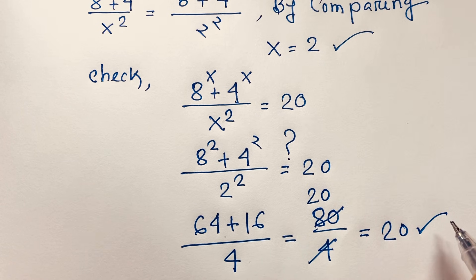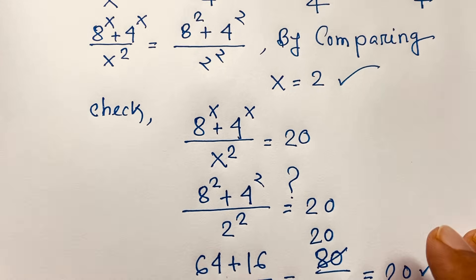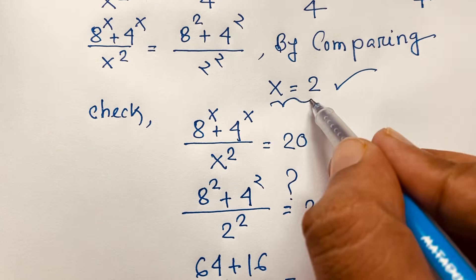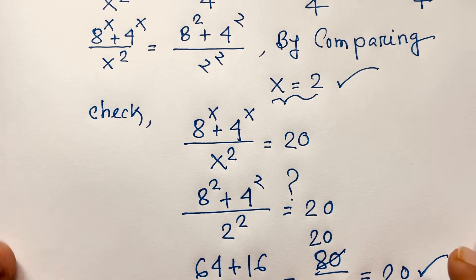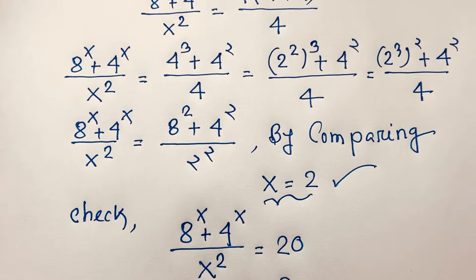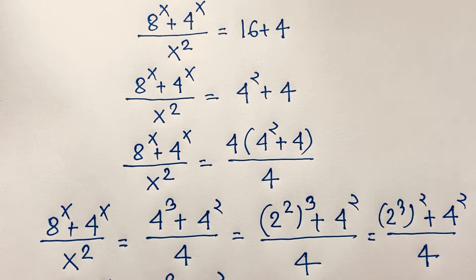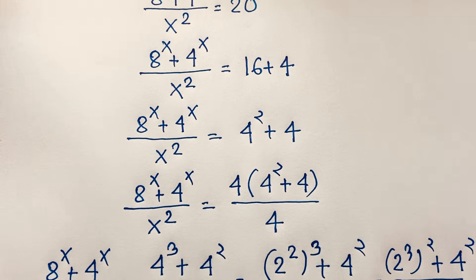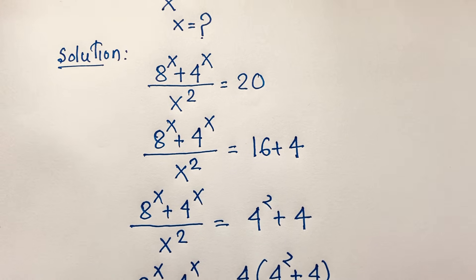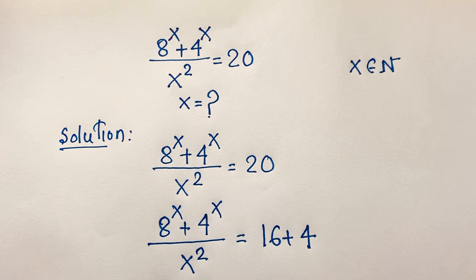Left-hand side equals right-hand side, both equal 20, so x equals 2 is confirmed as our final answer to this exponential math olympiad question. Thank you all — if you enjoyed this, please subscribe to my channel. Goodbye, take care everyone.